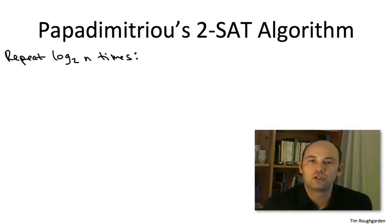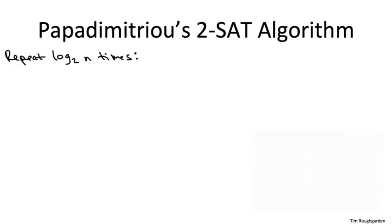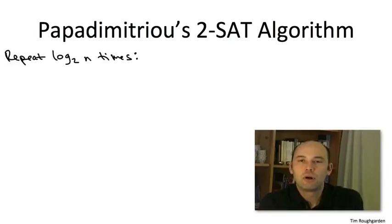The outer loop's responsibility is just to run a bunch of independent random trials. For those of you who are alumni of part one, let me make an analogy with Karger's randomized contraction algorithm. For that minimum cut algorithm, we had our basic randomized algorithm, and then we ran it a bunch of times, hoping that one of the independent trials would find us the minimum cut. Same thing's going to be going on here.